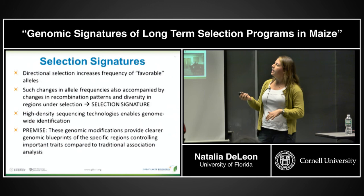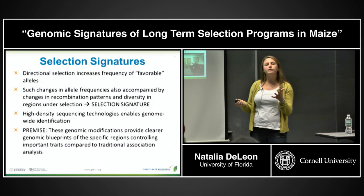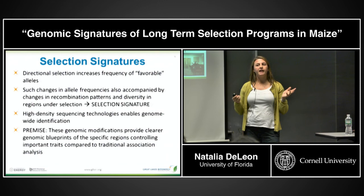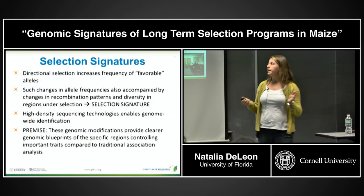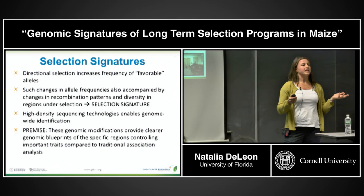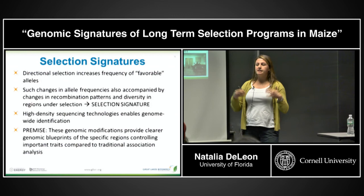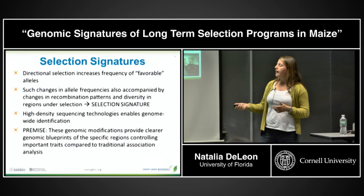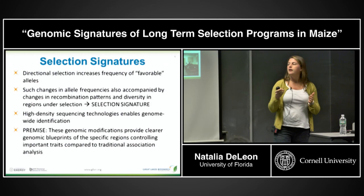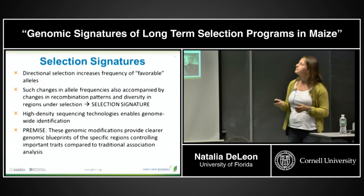This idea of looking at changes in the genome of selected populations to understand what regions control a trait is not new. What is new is that we can now do it at a genome-wide level — before, people could only focus on one gene at a time. Because we let selection tell us what the changes are in the genome, we expect a more constrained and accurate description of the important regions that control that trait.